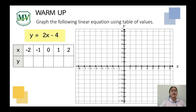For example, if x equals negative 2, y equals 2 times negative 2 minus 4. 2 times negative 2 is negative 4. Negative 4 minus 4 equals negative 8. Next, if x equals negative 1, 2 times negative 1 is negative 2. Negative 2 minus 4 equals negative 6.